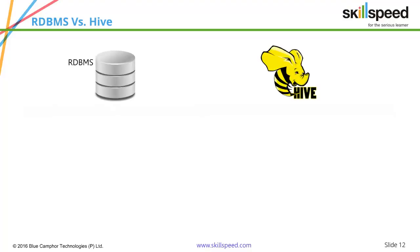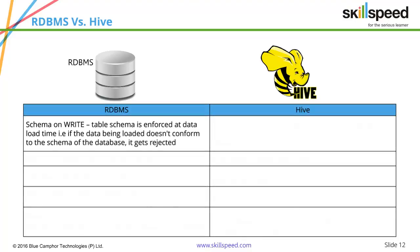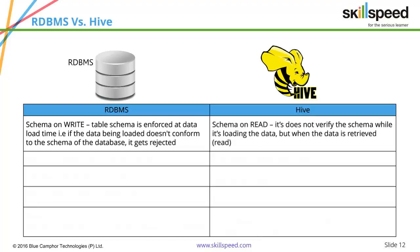Let's compare Hive with RDBMS. Even though Hive looks like an RDBMS, it is not one precisely. In RDBMS, there is a concept called schema on write — once you create a schema, the data is validated against it when loaded. In Hive, you have schema on read, meaning you can load as much data as you want and Hive does not verify the schema during loading, only when reading. RDBMS is not very scalable and is costly, whereas Hive is easily scalable and cheap since it runs on an already running Hadoop cluster.